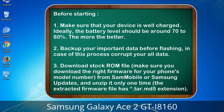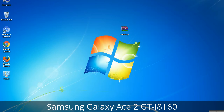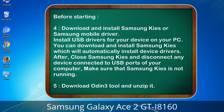3. Download the stock ROM file. Make sure you download the right firmware for your phone's model number from Sammobile or Samsung Updates, and unzip it only one time. The extracted firmware file has a *.tar.md5 extension. 4. Download and install Samsung KIES or Samsung mobile driver. Install USB drivers for your device on your PC. You can download and install Samsung KIES which will automatically install device drivers. After, close Samsung KIES and disconnect any device connected to USB ports of your computer. Make sure Samsung KIES is not running.